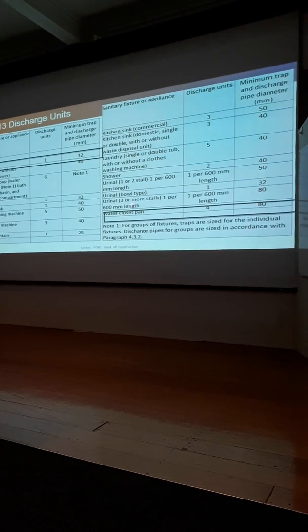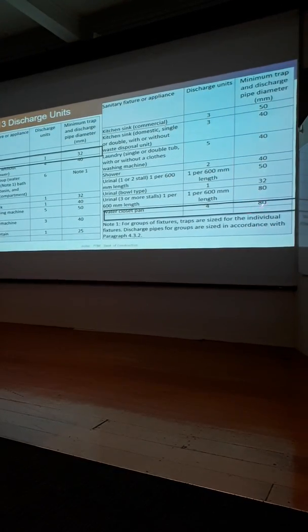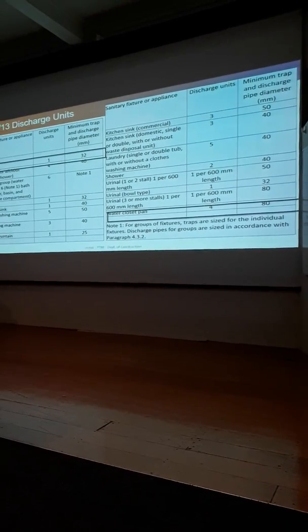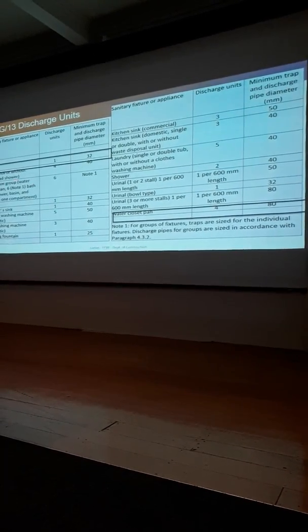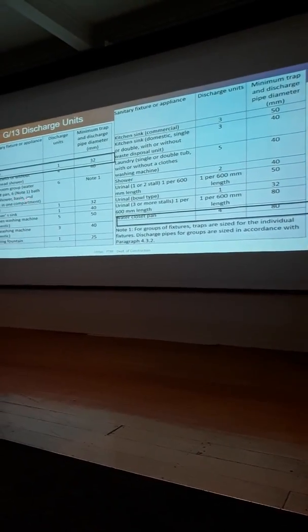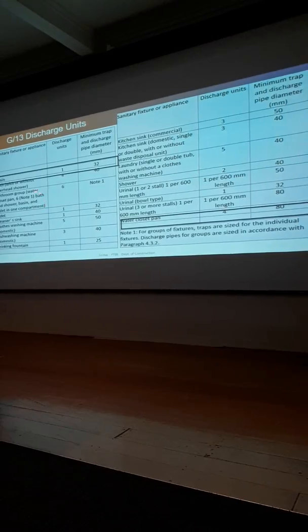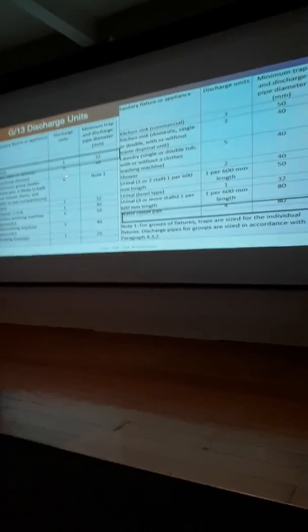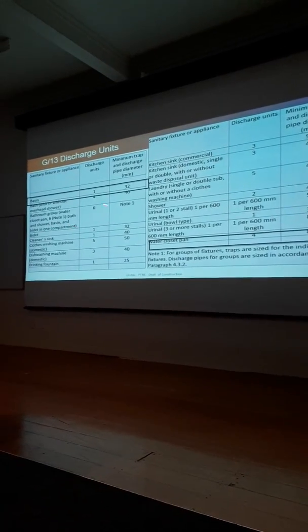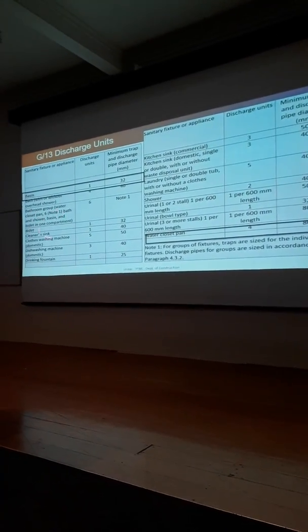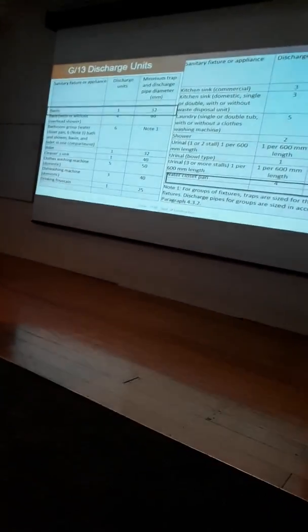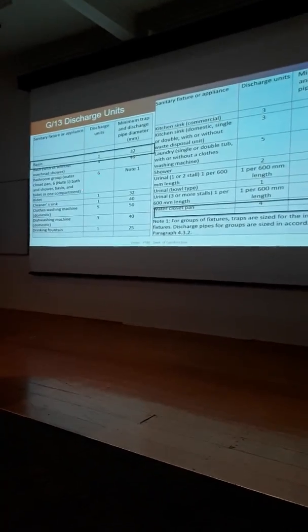There are overriding rules on water closets. I think you can only use an 80 mil if you've got one water closet. If you've got two, you have to be in a hundred. Then you've got a bathroom group. Bath, shower, basin, and bidet in one compartment. They collect all those into a single number. You can imagine a hotel would have lots of bathroom groups.